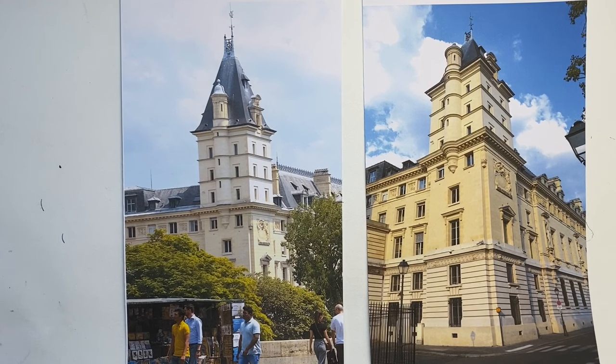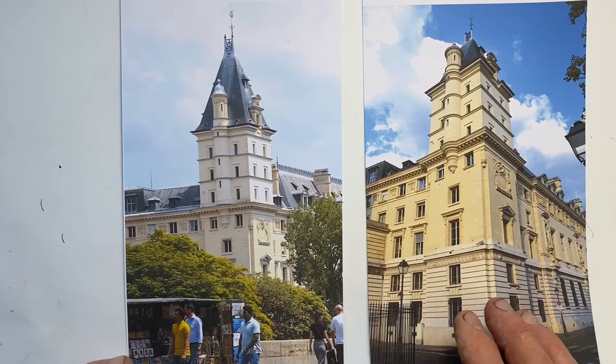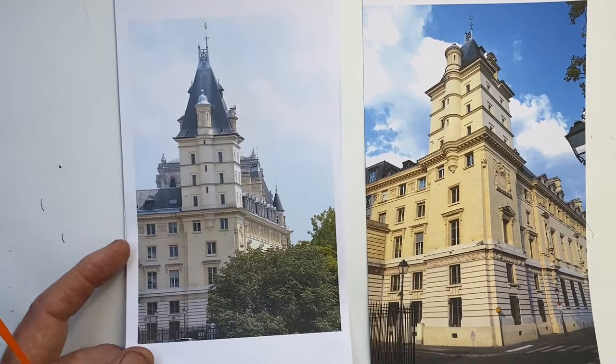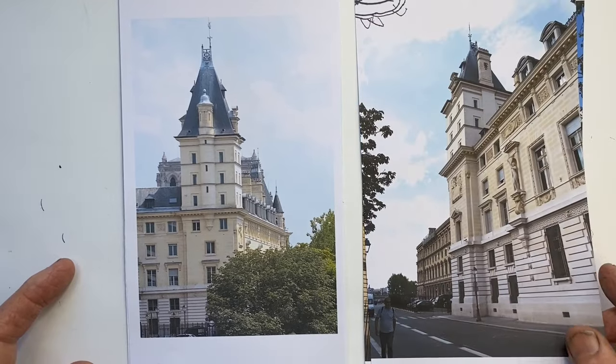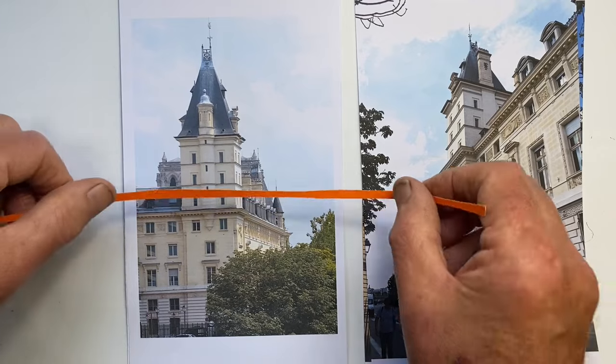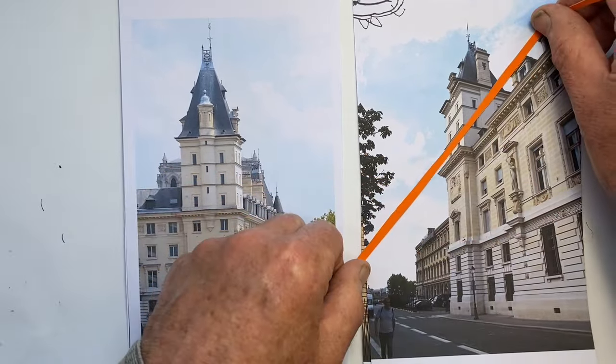As the viewing point changes, so the perspective changes. As we change our angle and position to the object, how it looks changes. If we're looking more side on, or if we're looking more upwards, what we see and the angles that we see occurring change.